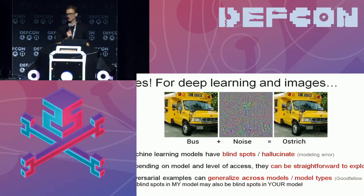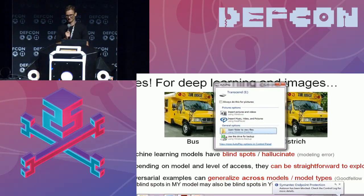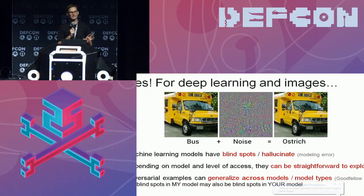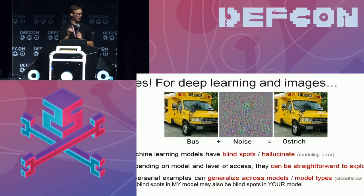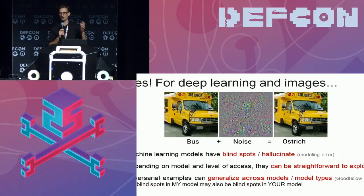It's actually become quite fashionable to break machine learning in recent years. If you haven't seen this image, this is famous in the image domain: one can take an image of a bus that an image recognition model knows is a bus with high confidence, change the pixels ever so slightly, and now — even though there's no visible difference — the model thinks it's an ostrich with high confidence. This is fun for images, but there are three takeaways from this kind of adversarial machine learning research.